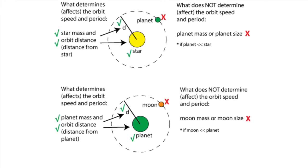The next graphic illustrates what determines or affects the orbit speed and orbit period, the distance between the central object and the orbiting object, and the mass of the central object. The mass of the orbiting object does not matter if the orbiting object is much less massive than the central object.